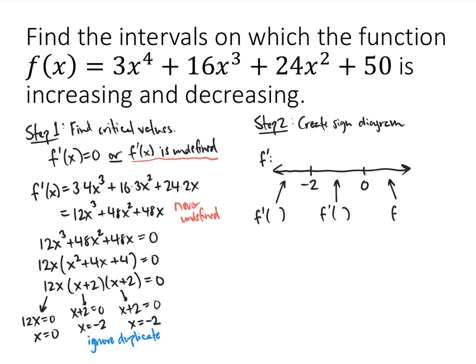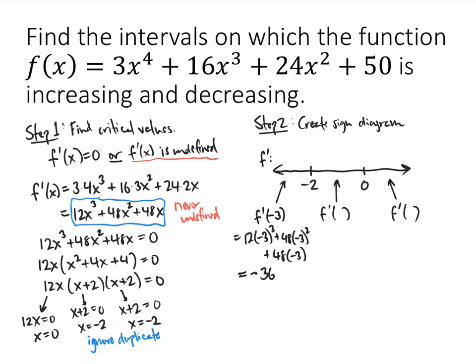We choose a value of x in each subinterval and plug it into the derivative to test whether f prime is positive or negative there. For the region less than negative 2, let's pick negative 3. Plugging into the derivative: 12 times negative 3 cubed plus 48 times negative 3 squared plus 48 times negative 3 gives negative 36. The important thing is the negative sign — f prime is negative for all values of x less than negative 2.